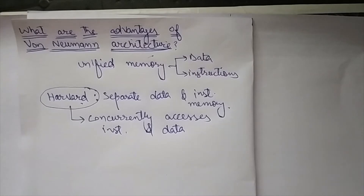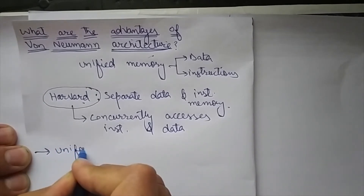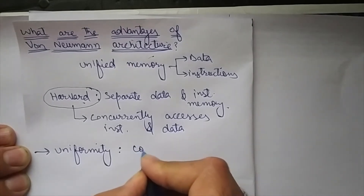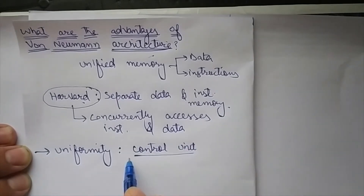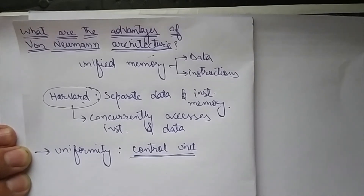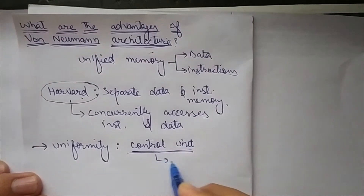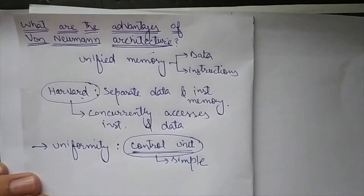One advantage of von Neumann architecture is uniformity. The processor retrieves both instructions and data in the same manner, so there is no difference in retrieving an instruction or retrieving data. This means the design of the control unit is very simple, because it works in the same manner irrespective of whether it is getting data or instructions from memory.